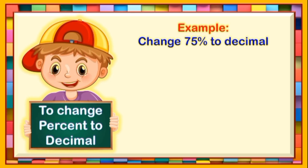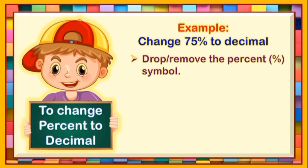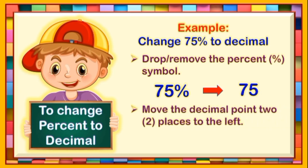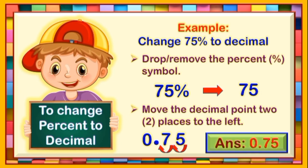Let's have this example. Change 75% to decimal. The first step is to drop or remove the percent symbol. In the given 75%, we will remove the percent symbol so we will have 75. The second step is to move the decimal point two places to the left. Since 75 is a whole number, the decimal point is after the one's digit. So let's do it: 1, 2. The decimal point now is before the digit 7. Let's write zero as the placeholder. Therefore, the answer is 0.75.